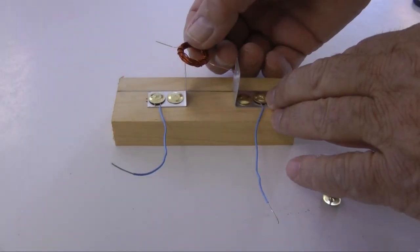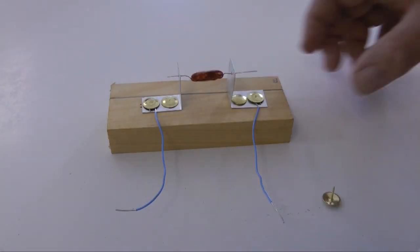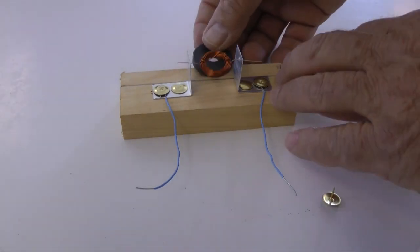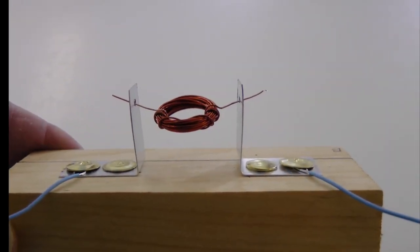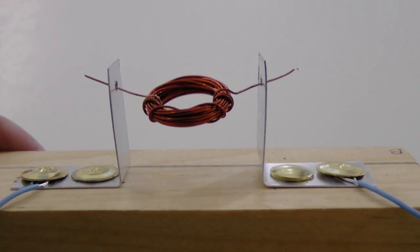Next, mount the coil by sliding each end into the holes in the brackets. Make sure the coil is centered and balanced and doesn't hang like this. Re-bend the wires if needed. The coil should be aligned like this.